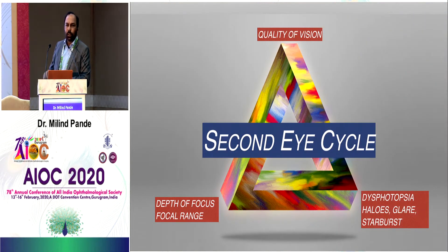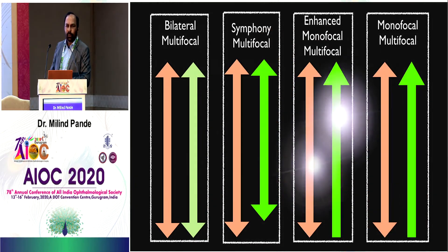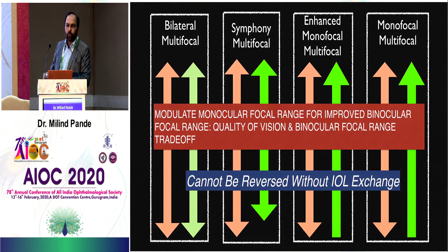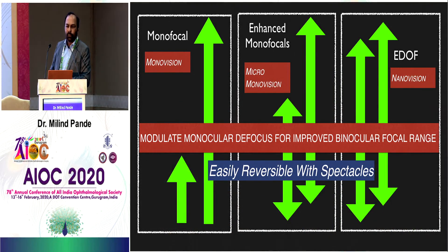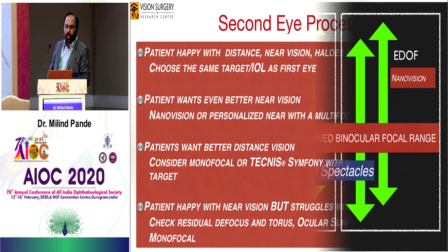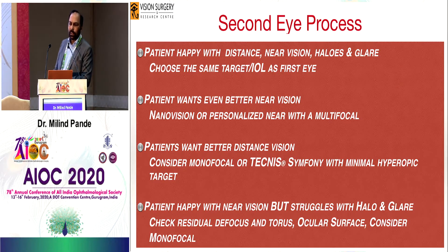There is always an opportunity when you do the second eye to try and reduce any potential problems. You can look at what issues a patient is facing after the first eye and decide what to do for the second eye. Options include using the same multifocal, a different multifocal, an EDOF lens, slightly different defocus using monofocals, monovision, enhanced monofocals, or an EDOF lens. In my practice, if the patient is happy with everything after the first eye, we simply repeat the same thing.